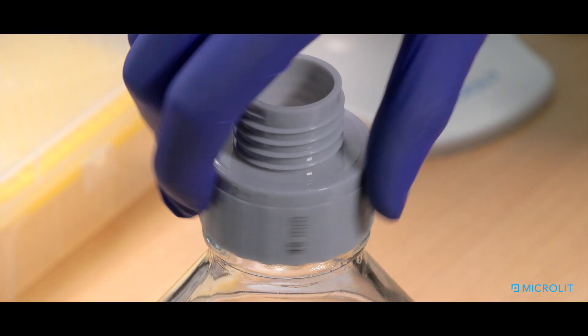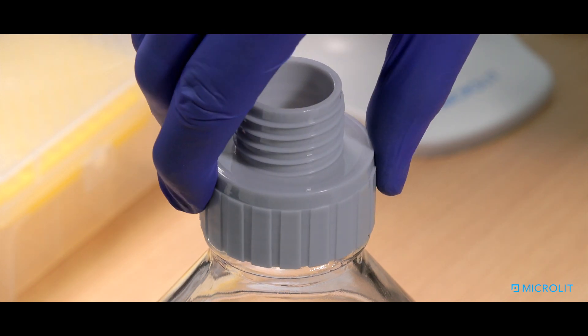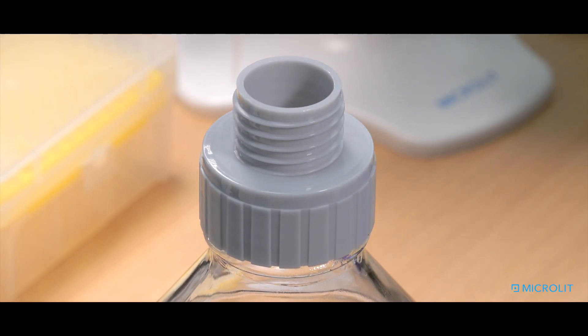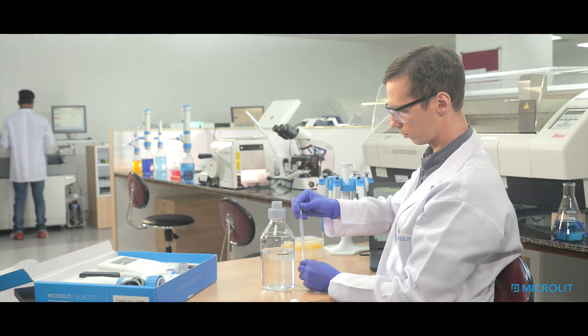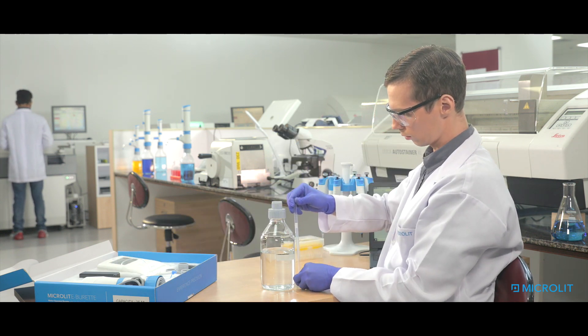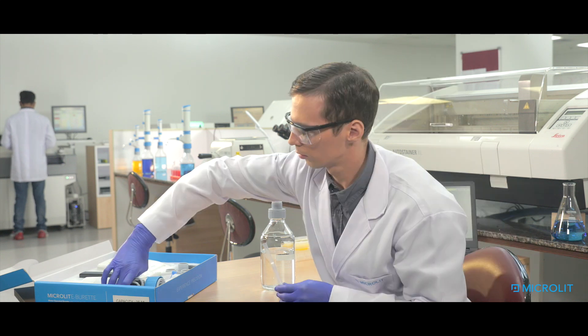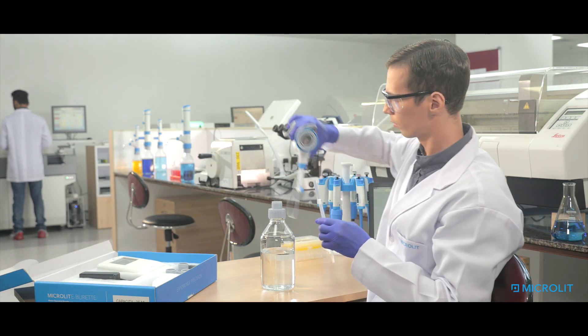Or you can also use the inbuilt adapter of 30mm depending on the bottle neck size. Now adjust the length of the Microlit eBuret's telescoping tube to fit your particular reservoir and fix the tube from the wider end.